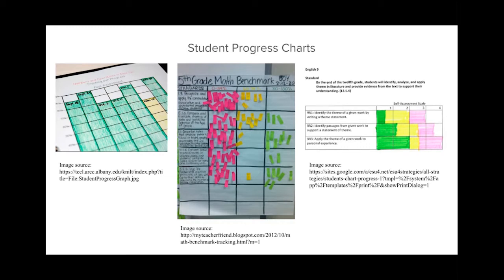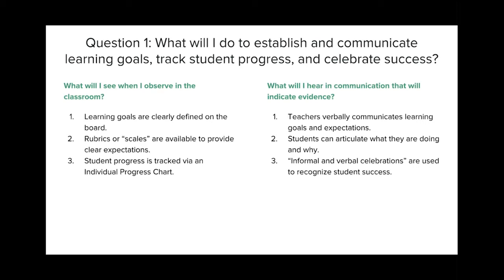What might an observer hear in communication to indicate evidence? One, teachers verbally communicate learning goals and expectations in a way that students can understand. Two, on the flip side, students can articulate what they're doing and why — in other words, they know what they're supposed to be learning. Finally, informal and verbal celebrations are used to recognize students' successes as opposed to a reward system.